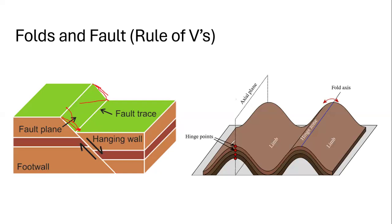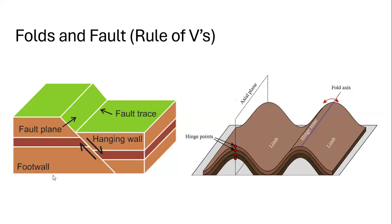When we are looking at the fold, these are the limbs and this would be the axial plane. Because the limbs intersect with the surface, they also resemble a V-shape. You can see we've got this V and this V. When outcrops resemble the shape of a V, it helps the structural geologist to understand whether we are having a fold or a fault and many other structural features.